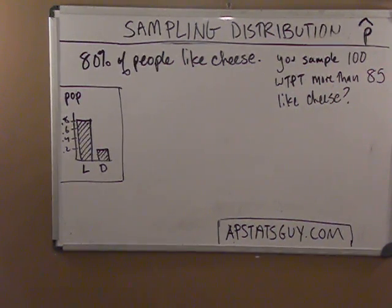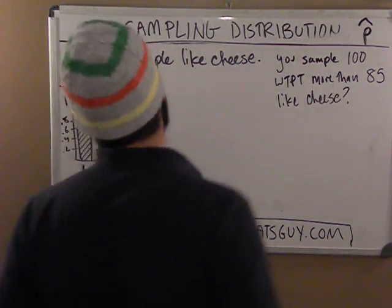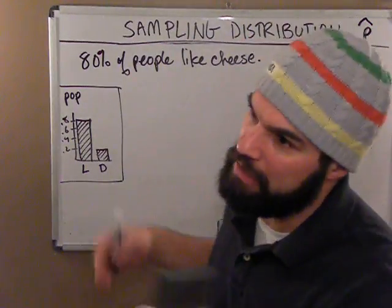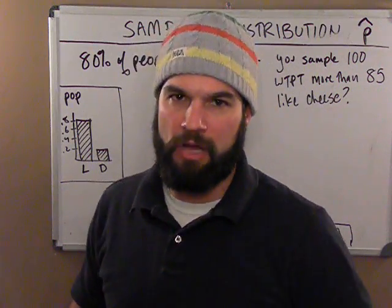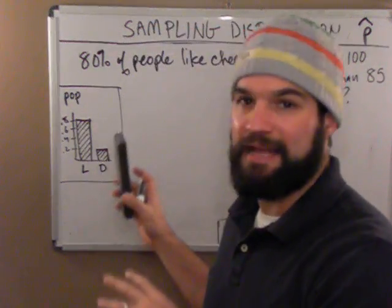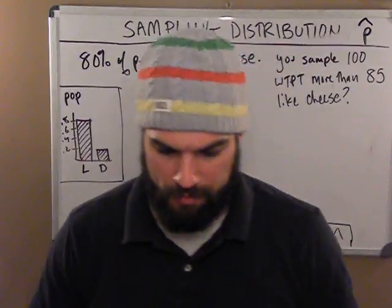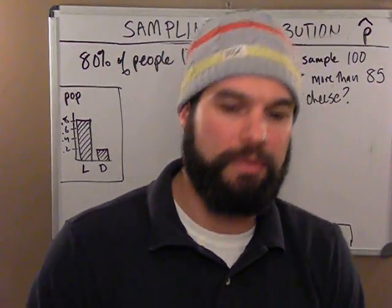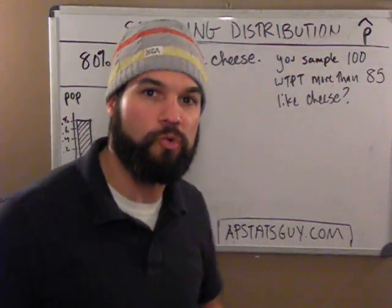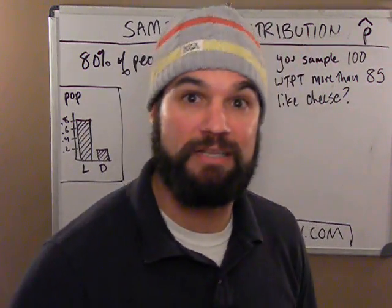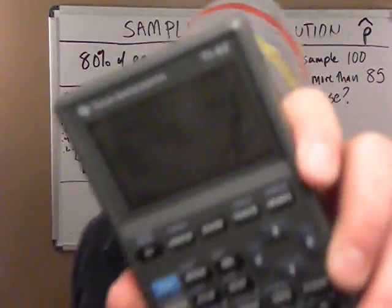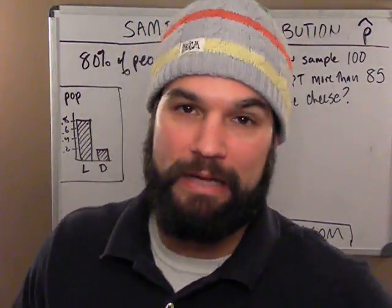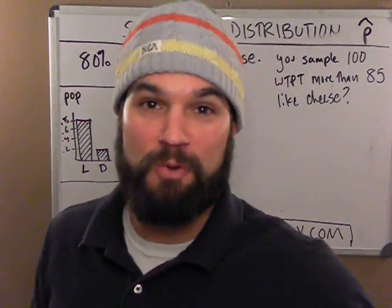Alright, here's a sampling distribution for p-hat. On sampling distribution of p-hat problems, I always ask you, if there's a bunch of people, it's the probability that more than this many have that. They're kind of like binomial problems — the p-hat distribution feeds directly off the binomial, the normal approximation for the binomial. We'll go into that later. Right now I don't have norm CDF because all I have here is a TI-82, so I'm just going to get down to the norm CDF part and then make an estimate at the end.